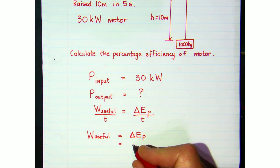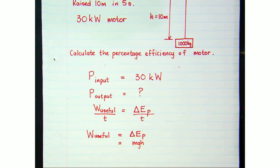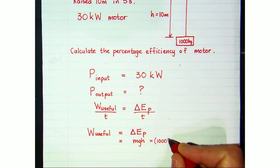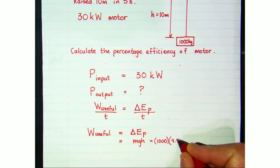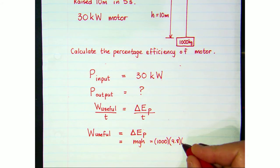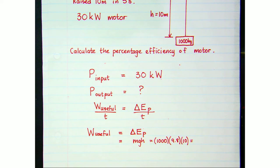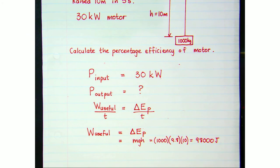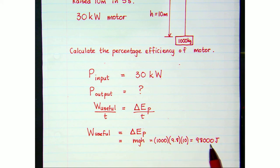To calculate the useful work done we work out the change in potential energy of the block: ΔPE = mgh. The mass is 1,000 kilograms, g is 9.8, and the vertical height is 10 meters. Putting that into the calculator gives us 98,000 joules. That's how much useful work was done — the change in mechanical energy, specifically a change in potential energy.